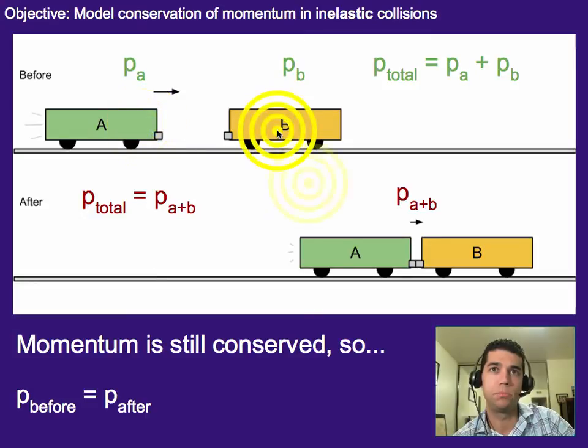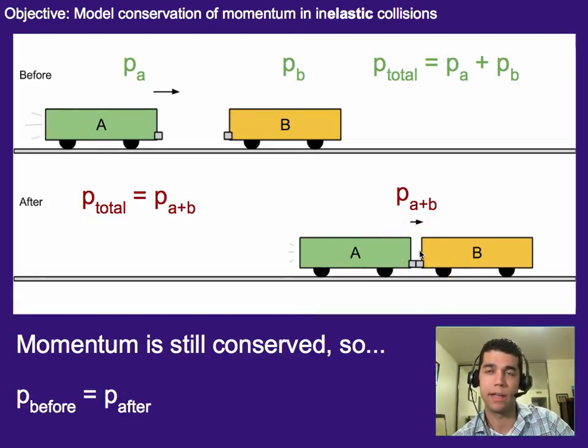So in this case we have two things before, so that means I have two momentum terms before. After, since they're connected, we only have one thing. It's bigger, so I need to account for that, but it's one thing after so we just get one term for the momentum after.